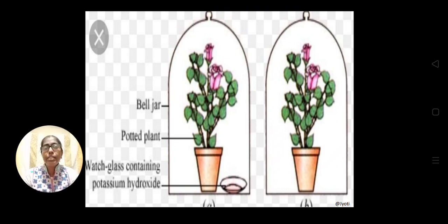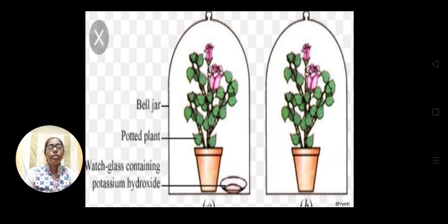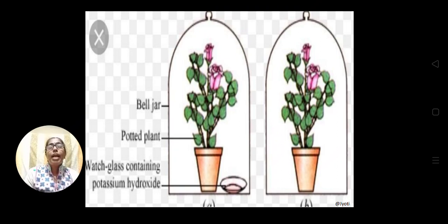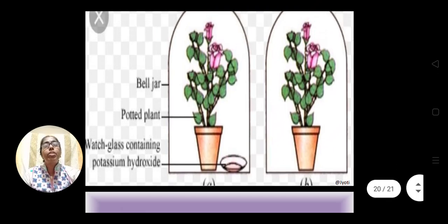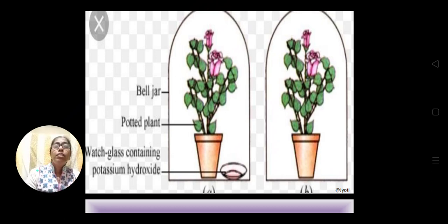The role of potassium hydroxide is to absorb carbon dioxide. Whatever carbon dioxide is present inside the bell jar, or carbon dioxide released during the plant's respiration, is absorbed by the potassium hydroxide in Setup A. In Setup B there is no potassium hydroxide, so carbon dioxide is available — it is taken up by the plant and utilized for photosynthesis, oxygen is released and taken in during respiration. Keep both plants under sunlight for three to four days.